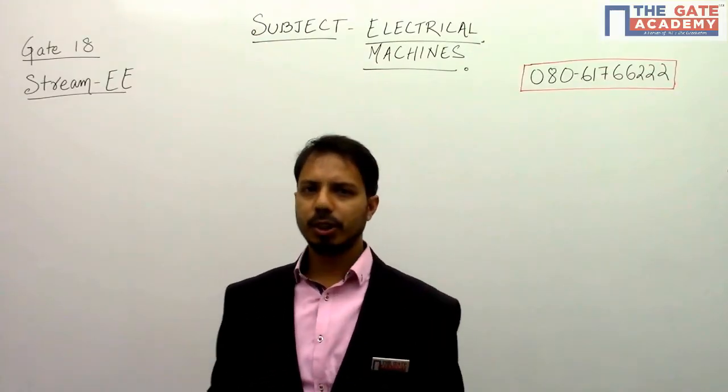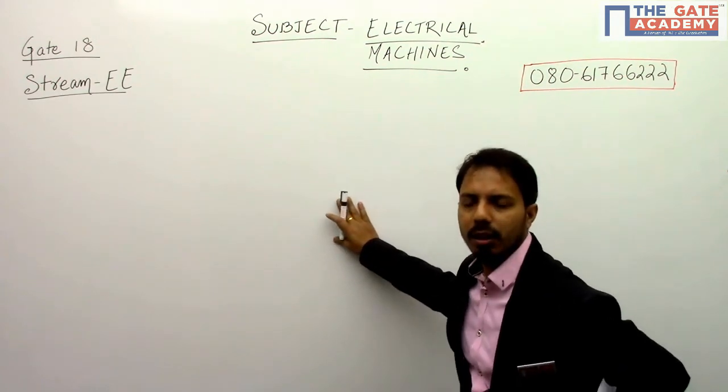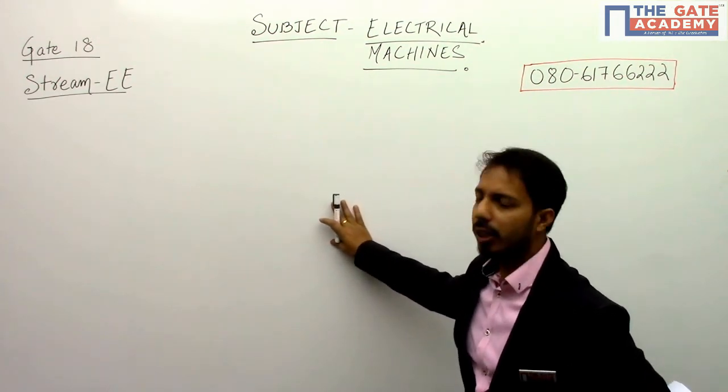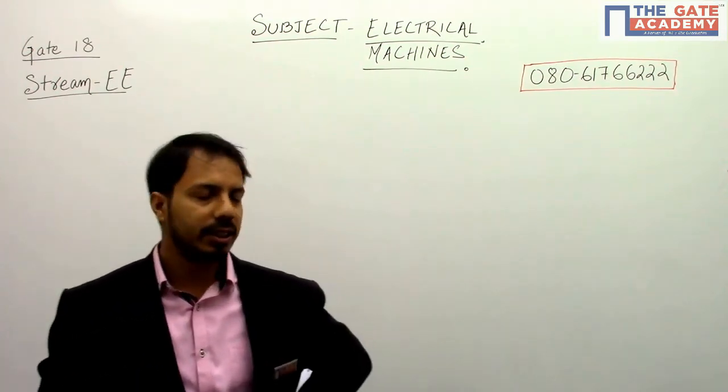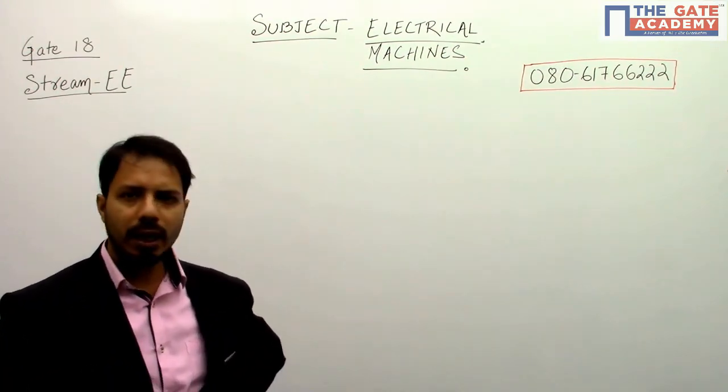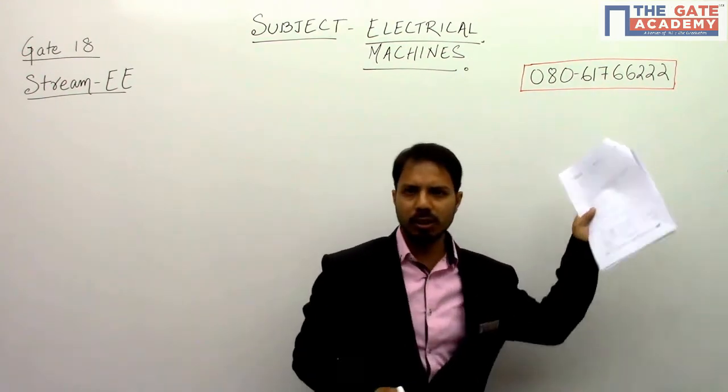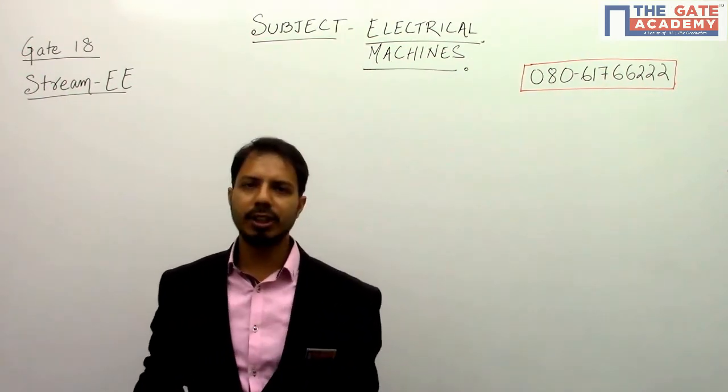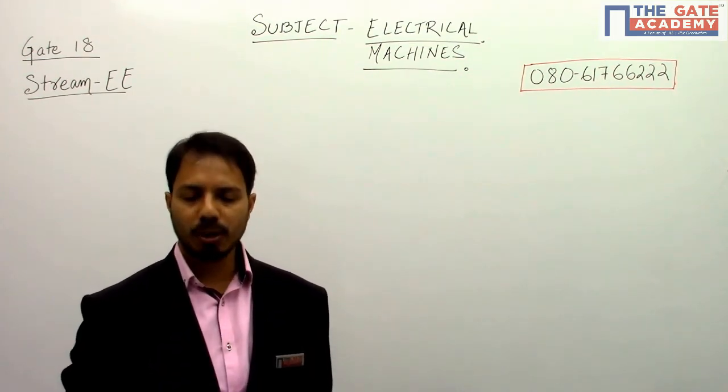Okay, hi everybody. Today we are going to discuss the GATE 18 double E paper, the electrical machine questions that came in this GATE 18 paper. If you have any doubt, you can reach us on this particular number. So let's start with the question that is from transformer and voltage regulation.